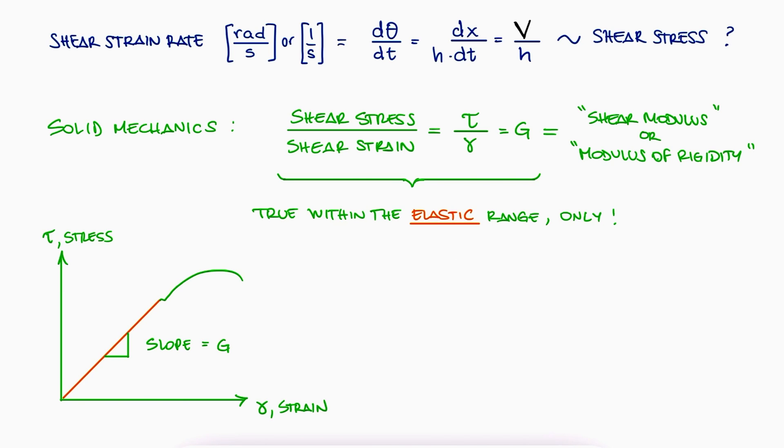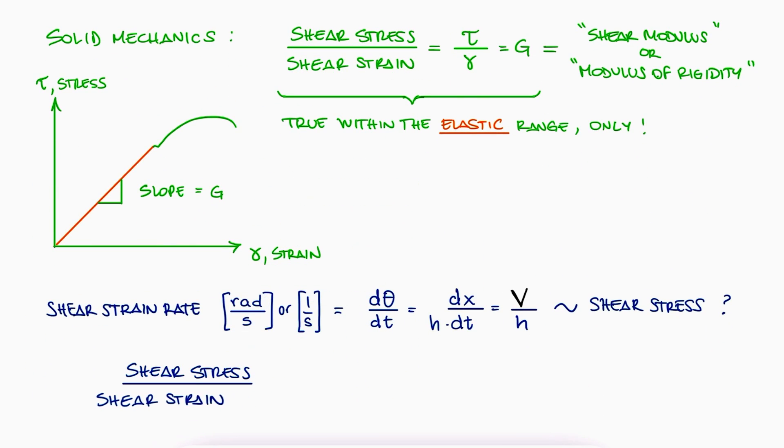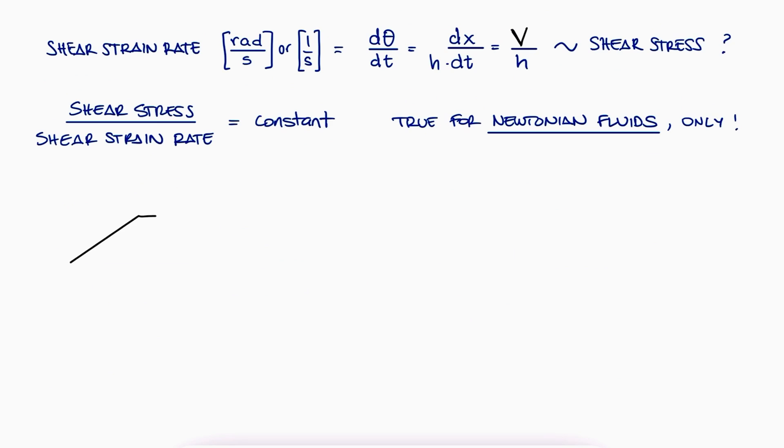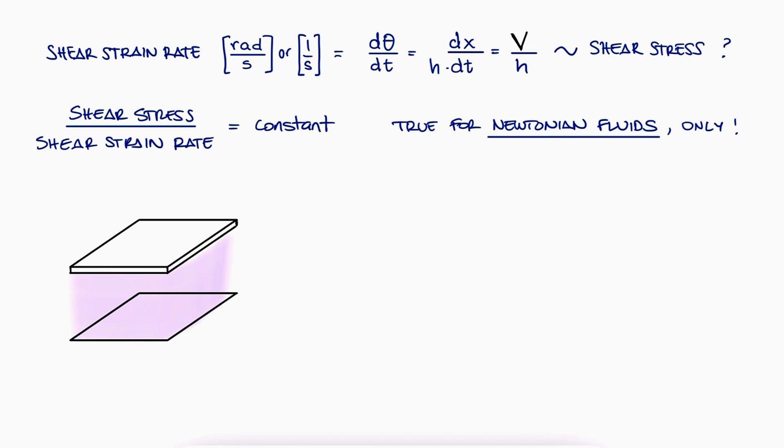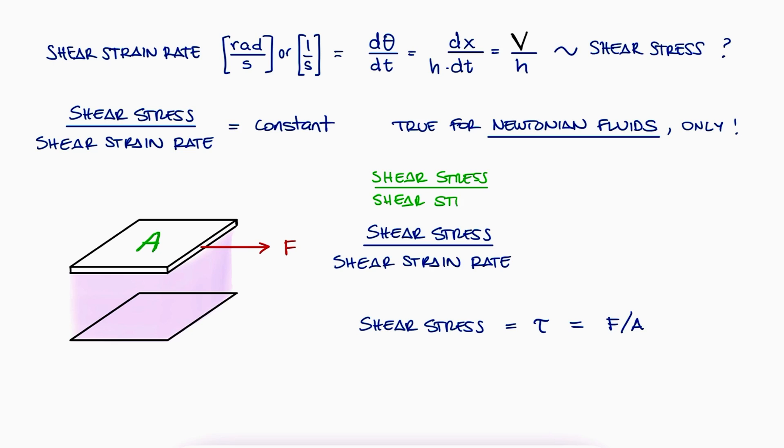Very similarly here, the relationship between shear stress and shear strain rate will be linear, as long as our fluid is what we call a Newtonian fluid. If we're pulling the top plate that has area A with force F, then the shear stress can be calculated as τ = F/A. In Newtonian fluids, the shear stress over the shear strain rate is a constant that we call viscosity.